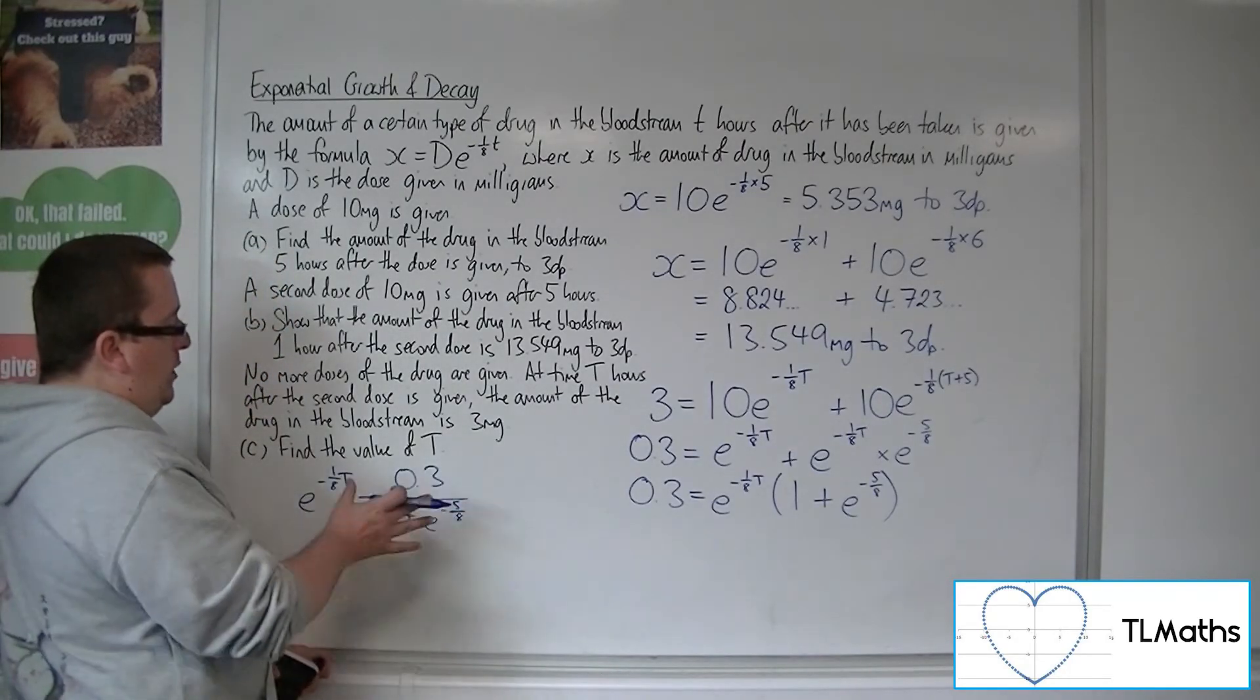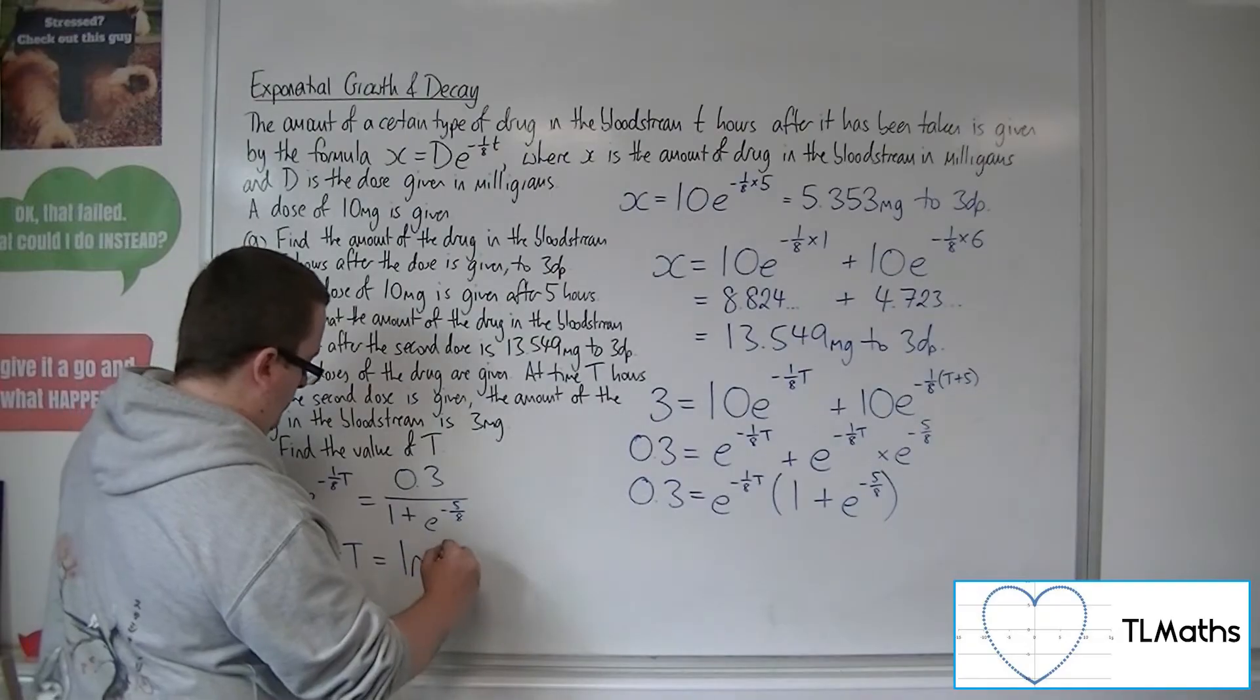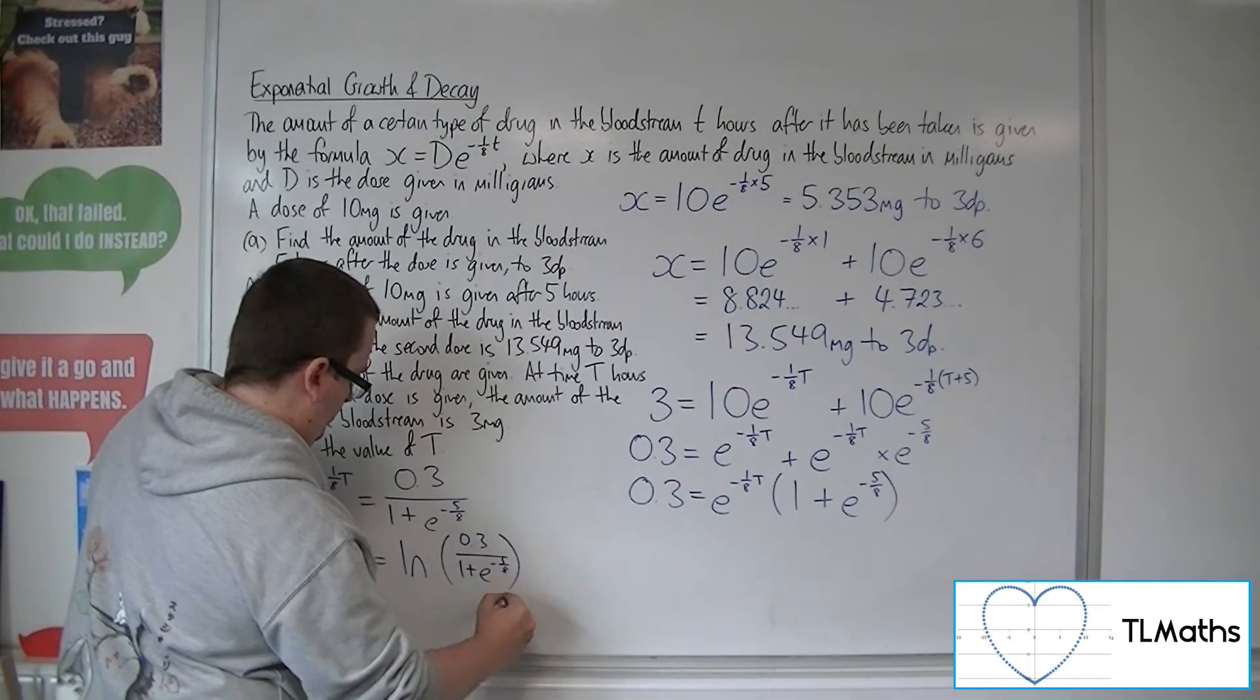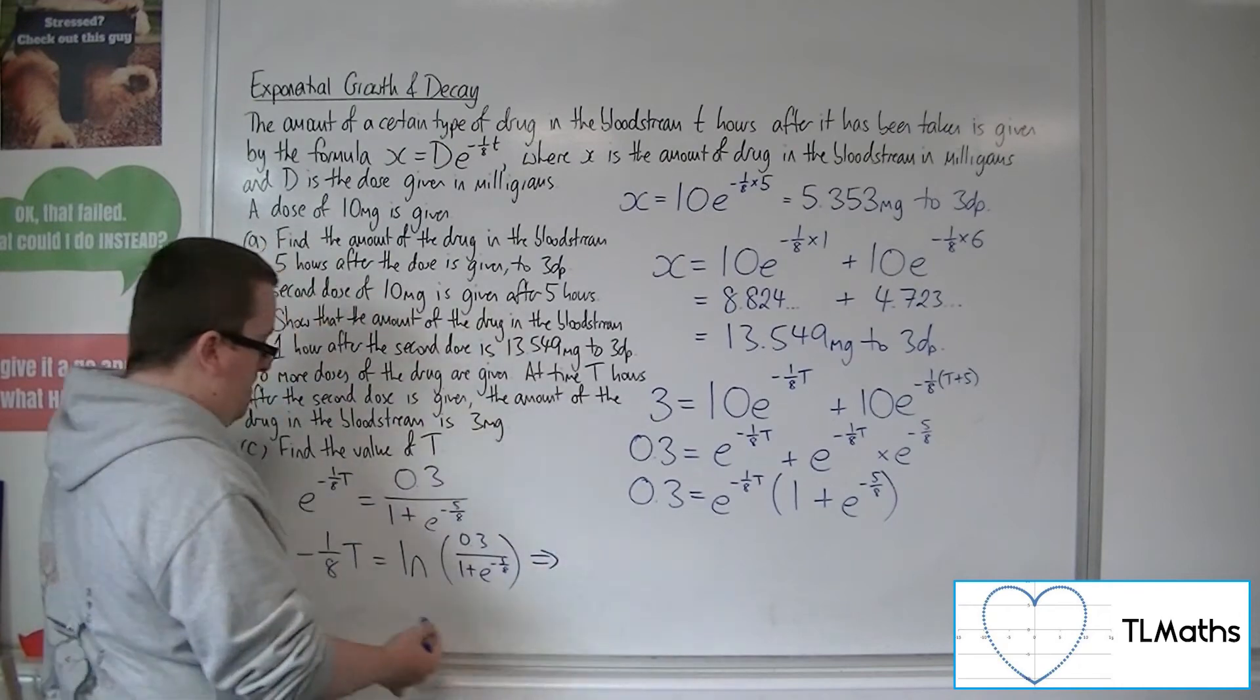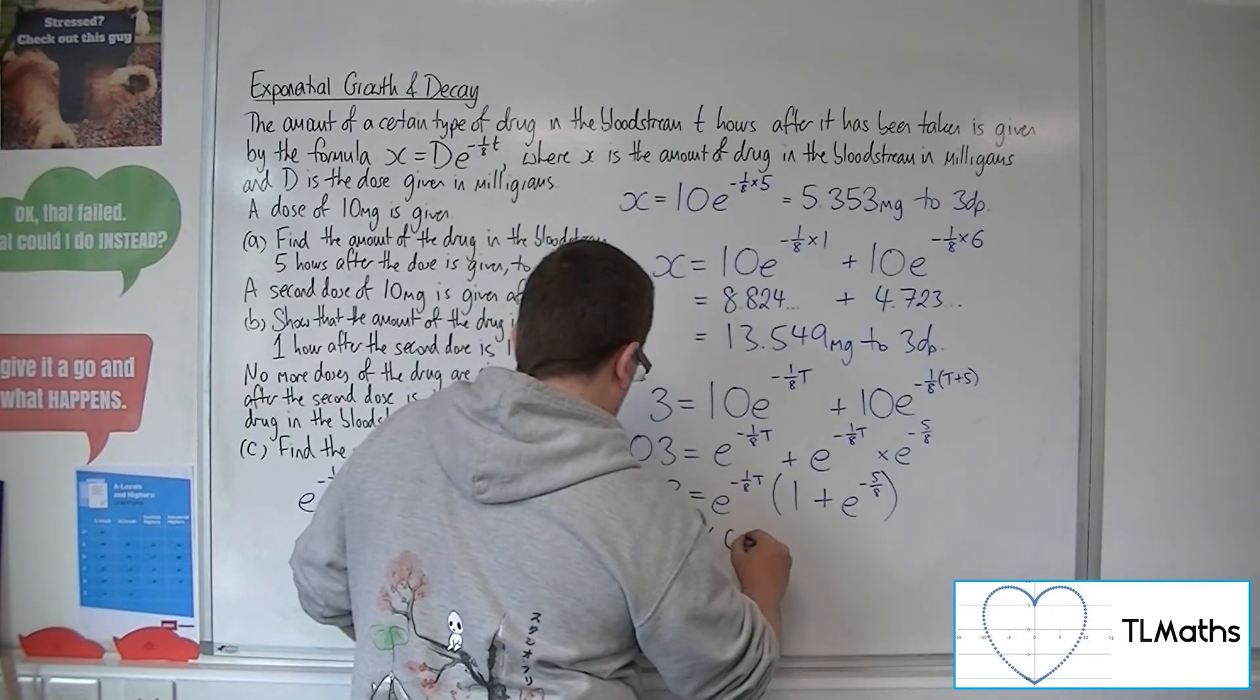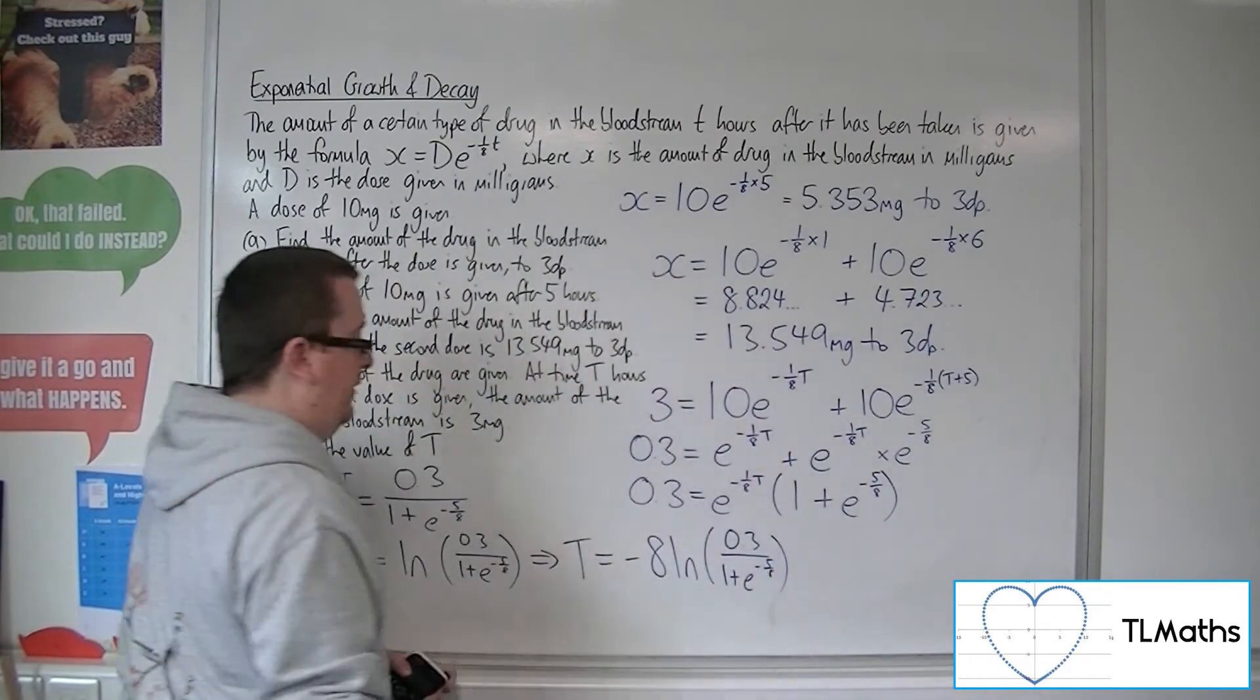So then you can log both sides. Like so. And then you can multiply both sides by minus eight to get T by itself. Like so.